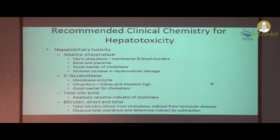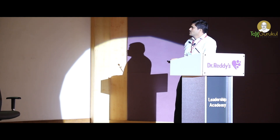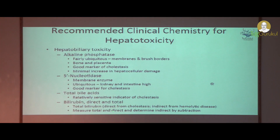For hepatobiliary toxicity the enzymes to consider are ALP, that is alkaline phosphatase, which is ubiquitous in the membrane brush border and is seen in bone and placenta. It is a good marker for cholestasis and minimal increase is seen in hepatocellular damage. In rodents, especially rats, the amount of ALP produced by the intestine is more when compared to the liver, so it might not be very useful in rodents. Other markers include 5-nucleotidase, total bile acids which are relatively sensitive markers for cholestasis, and direct and total bilirubin. Total bilirubin indicates cholestasis and indirect bilirubin is due to hemolytic disease.